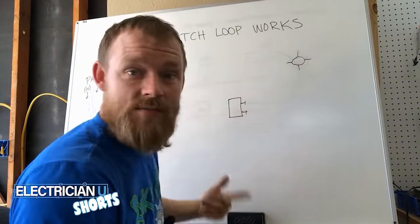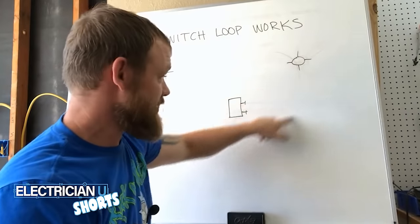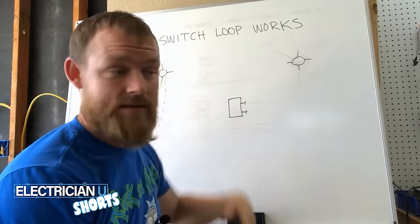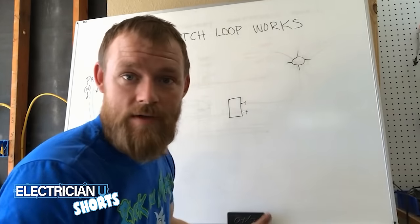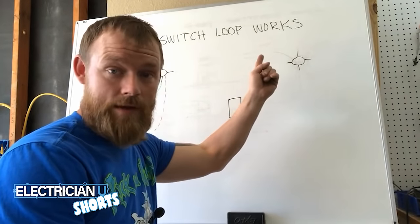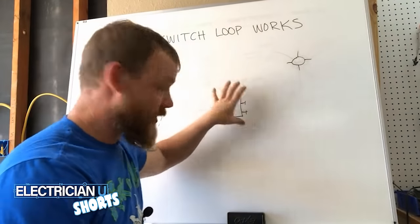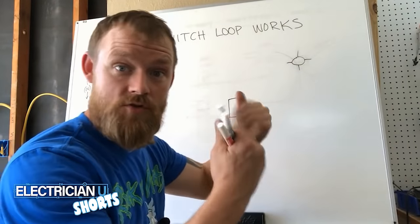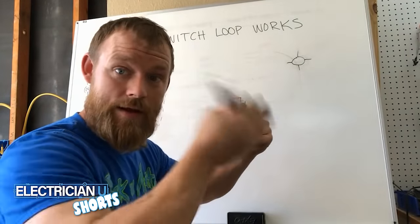You're not going to run a neutral down here because a switch doesn't need a neutral. A switch just needs a hot in and a hot out. It's the same one piece of wire. You can think of a switch as basically one wire that goes from the panel all the way up to a light. And what you're doing is you're putting a switch in the middle of it to be able to turn that off and disconnect that wire and cut it in half basically.